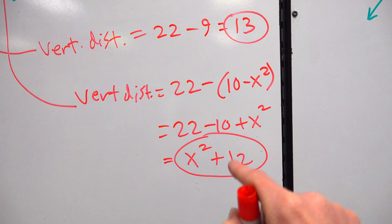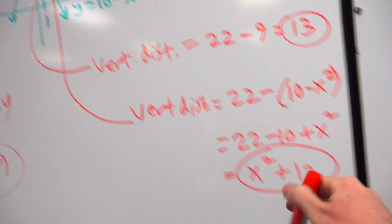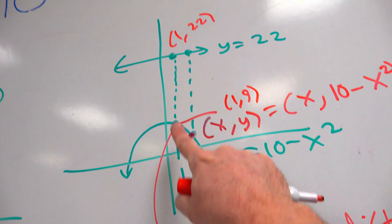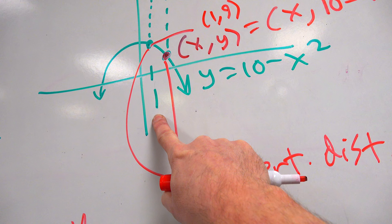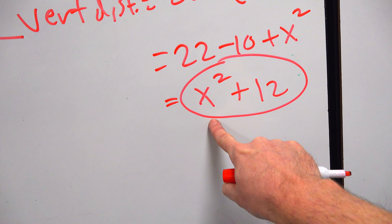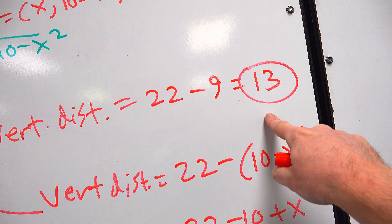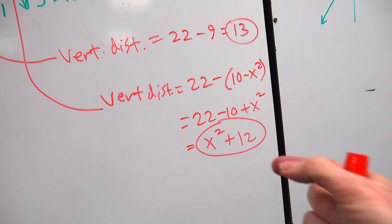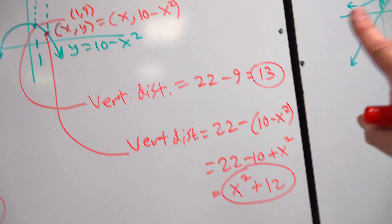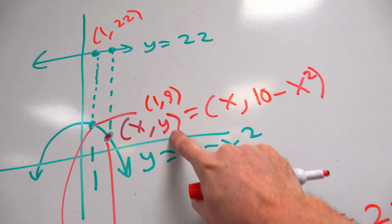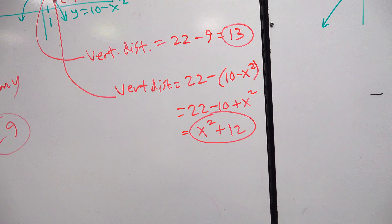That is the formula to find the vertical thickness at any point between that horizontal line and that parabola. That formula will automatically give it to you. Didn't we just find the vertical distance at X equals 1? It happened to be 13. Take X equals 1, plug it into our new formula: 1 squared plus 12 — son of a gun, it is 13. This formula actually works. If you don't know the Y coordinate, it is just the equation in general, and good things will happen.